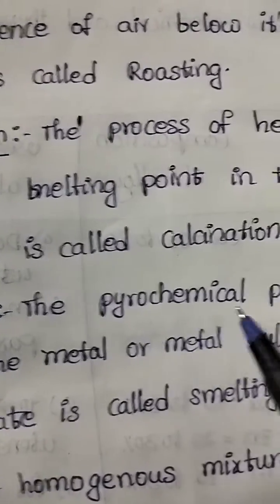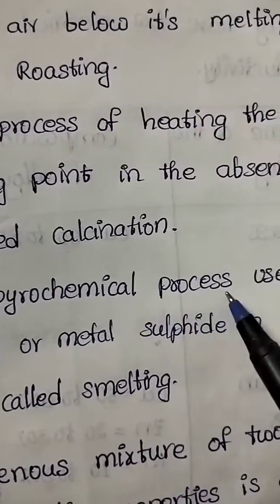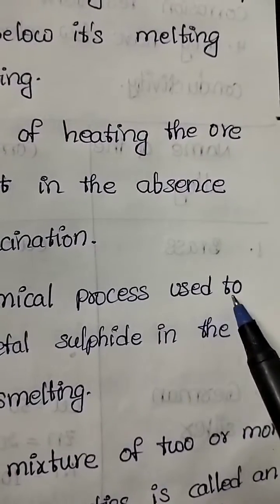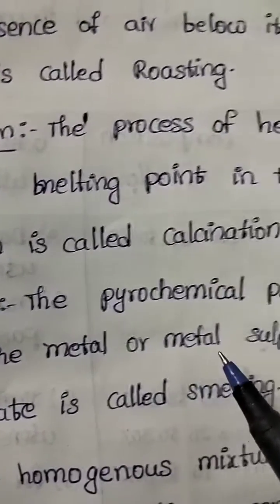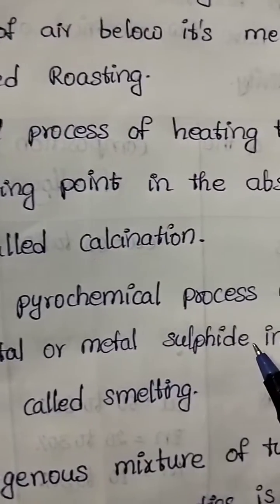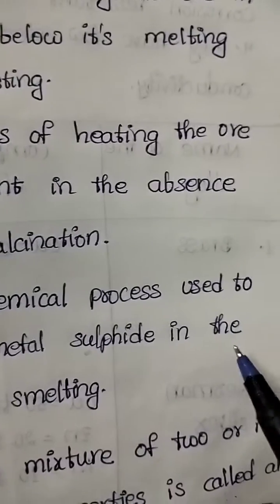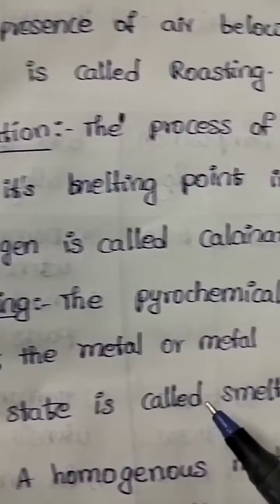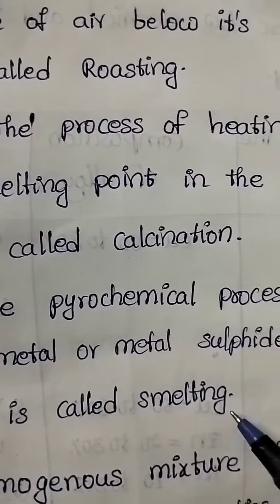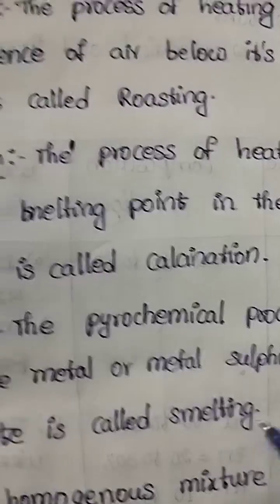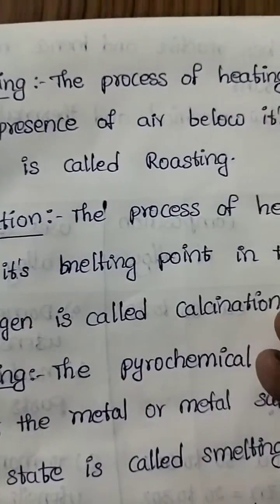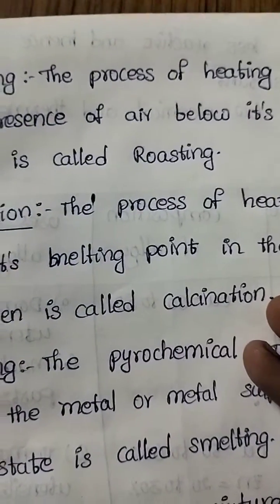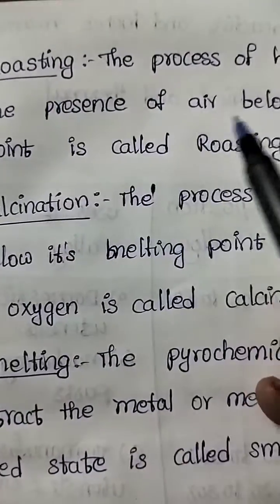Smelting: the pyrochemical process used to extract the metal or metal sulfide in the fused state is called smelting.